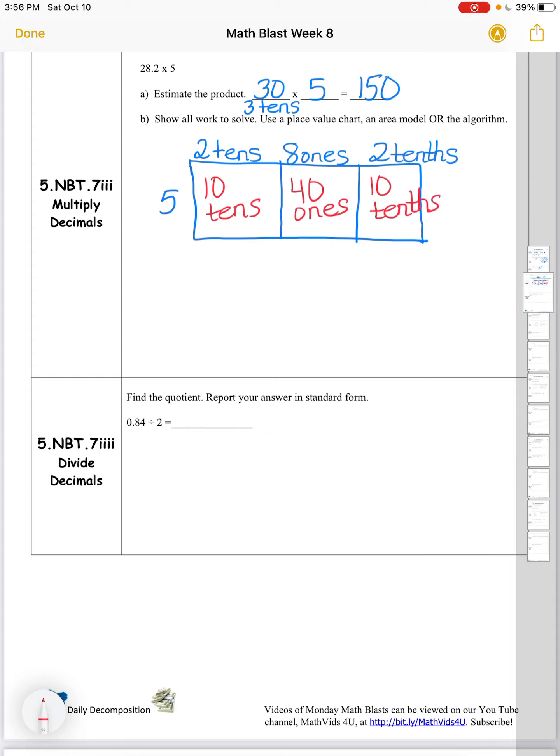Now I'm going to put each of those in standard form right below my area model here. Ten tens is one hundred. Forty ones is forty. And ten tenths is one. When I add all of those parts to the product there together, I get 141. So 28.2 times 5 is 141.